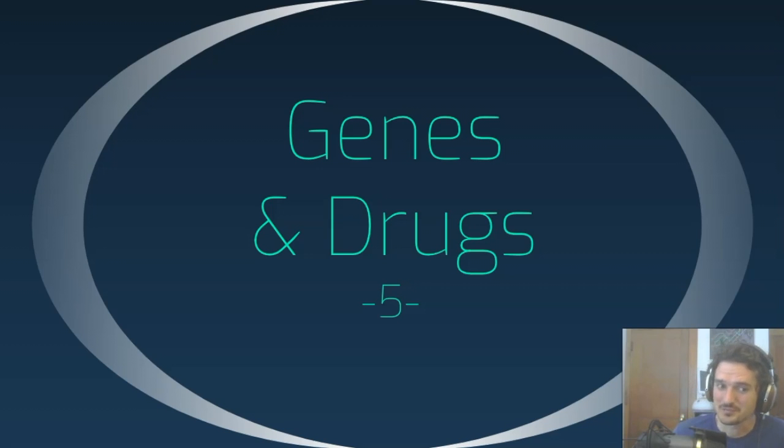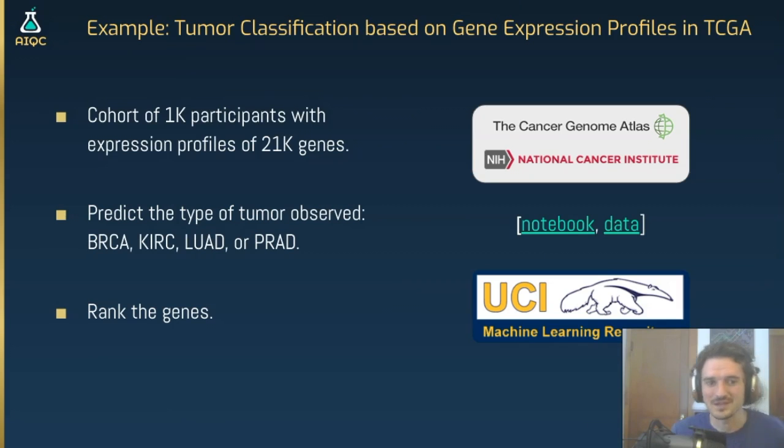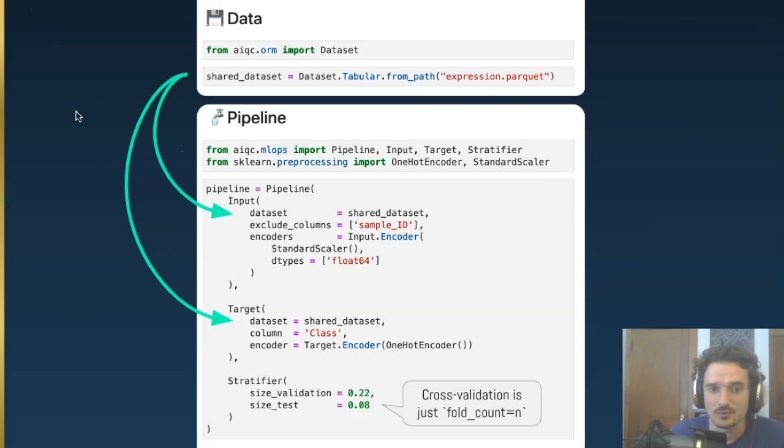So we're finally going to get to apply some deep learning. We'll start with some genetic target discovery. This is the data set that's easy to get your hands on. The data is public in TCGA anyways, but someone leaked it out onto UCI. It's the expression of genes for a thousand patient cohort for five different tumor types. We're going to try to rank the genes that are driving the expression of these tumors. So this is actual AIQC code. We've got a dataset tabular. We're pulling from that matrix that we talked about. And here we see the high-level API, the pipeline, the input, the target, and the stratifier class, all declaratively defined.